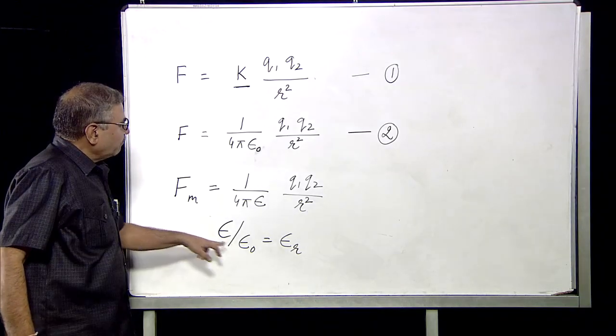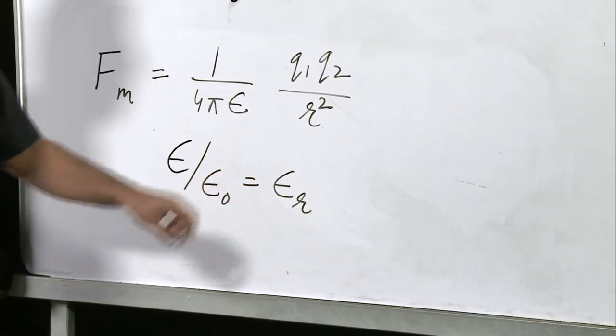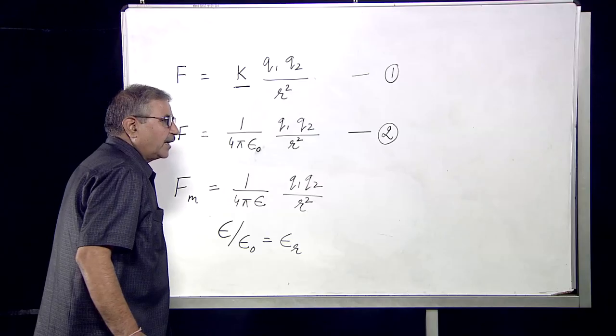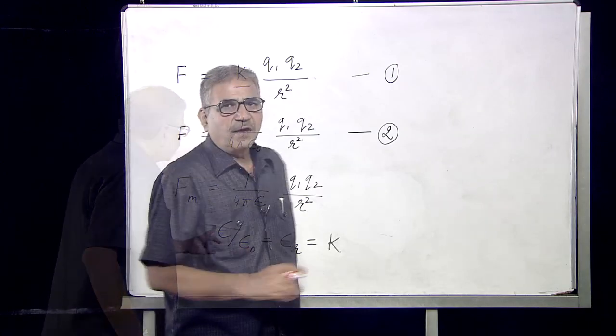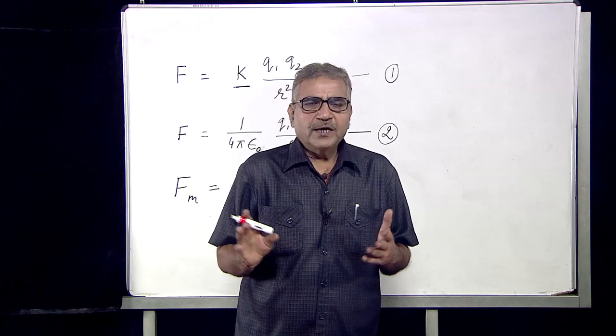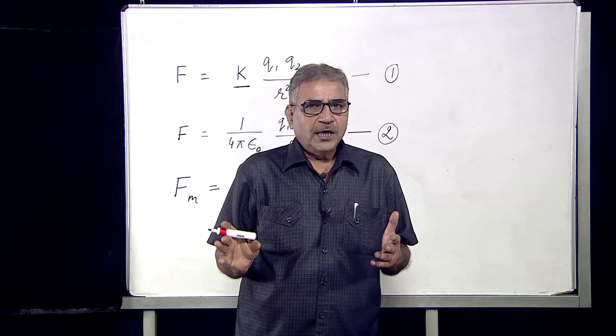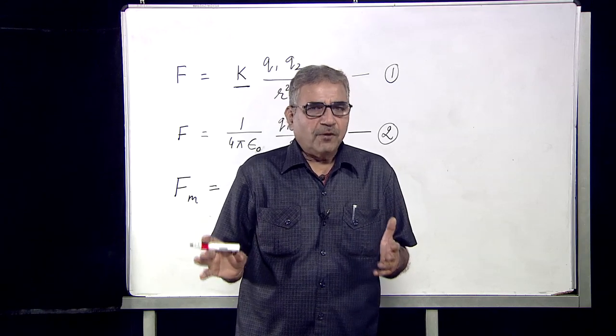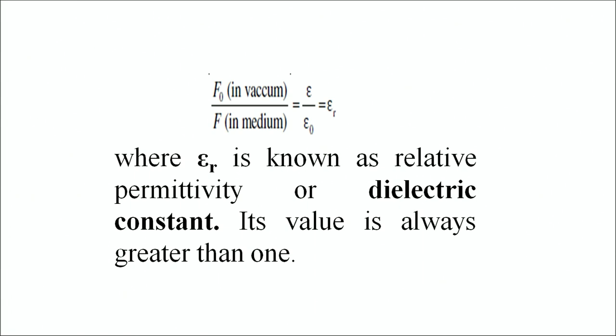The ratio of epsilon upon epsilon naught is known as epsilon r, the relative permittivity of the medium, which is also known as the dielectric constant of the medium. We can write that F in vacuum divided by F in medium equals epsilon r, the relative permittivity.